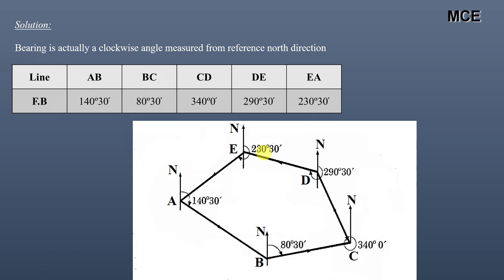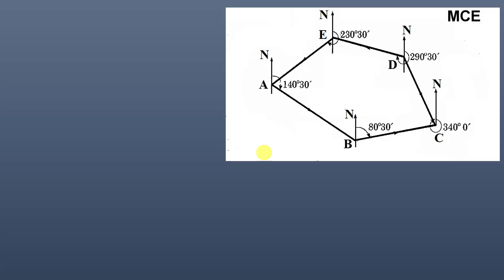After drawing the rough sketch, we will calculate the back bearings of these lines. If the fore bearing of a line is less than 180°, the back bearing equals fore bearing plus 180°. If the fore bearing is greater than 180°, the back bearing equals fore bearing minus 180°. Fore bearing of AB is 140°30', which is less than 180°, so back bearing = 180° + 140°30' = 320°30'. Fore bearing of BC is 80°30', also less than 180°, so back bearing = 180° + 80°30'.